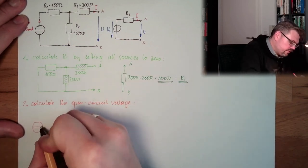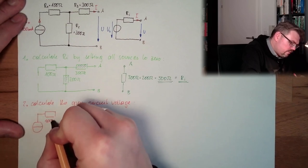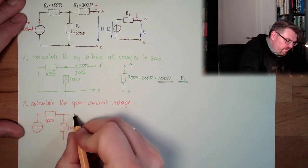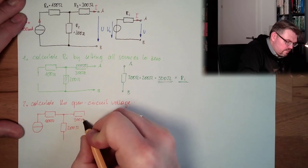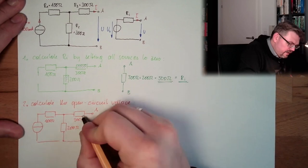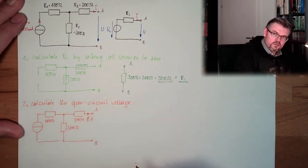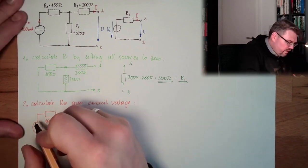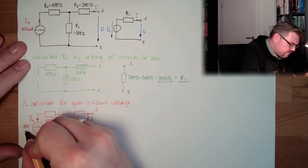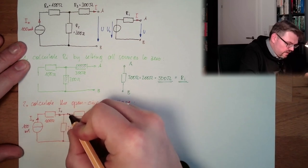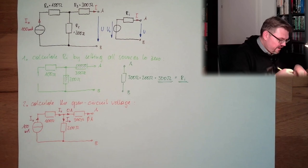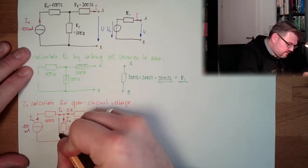Let's look at how the open circuit looks. We have 100 ohms, 200 ohms, 300 ohms, connector A, connector B. Open circuit means zero amps here, so no voltage drop there. We have I0 = 100 mA from the current source, I0 here as well, and zero amps at the open terminal. So we also have I0 here.